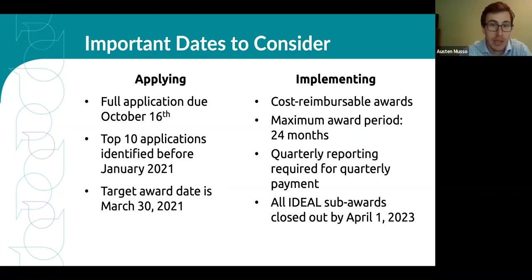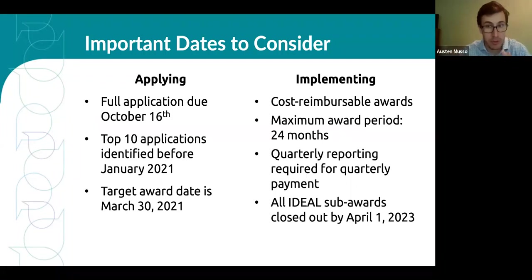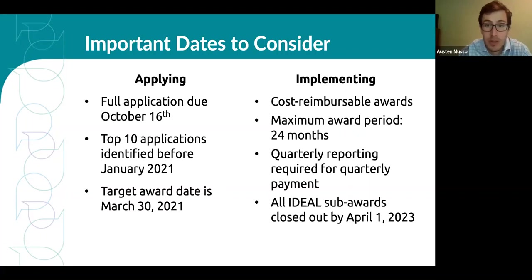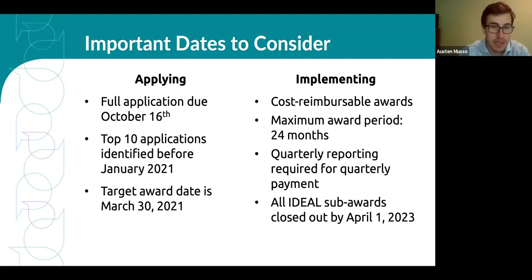The total award length for this applied research award is 24 months, including time for research, report writing, report review by the Ideal team, and dissemination. You can submit a shorter work plan if your research methods allow, but we will only consider a maximum of 24 months. We expect each award to close no later than April 1st, 2023. Quarterly reporting will be required to facilitate those quarterly payments.